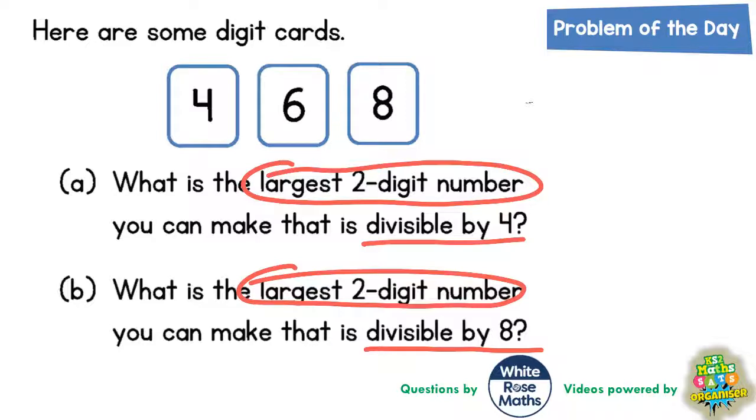Well if we begin with the eight, we could either have eight with a six to make 86 or eight with the four to make 84. We could begin with a six, in which case we could have six with the eight to make 68 or six with the four to make 64.